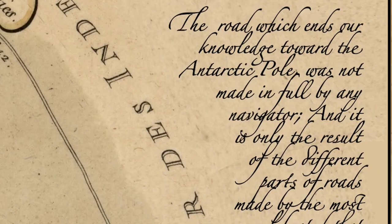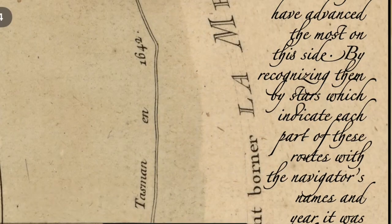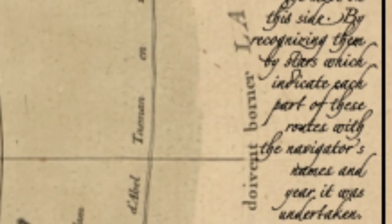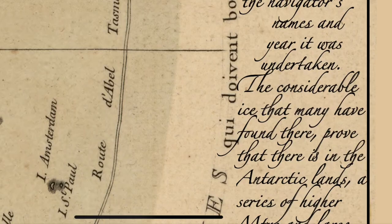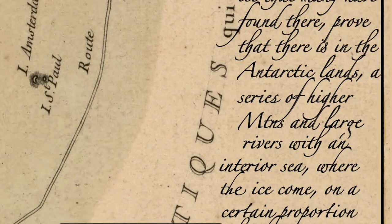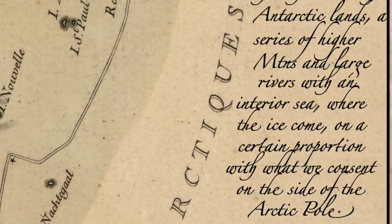The road which ends our knowledge towards the Antarctic Pole was not made in full by any navigator, and it is only the result of the different parts of routes made by the most celebrated that have advanced the most of this side. We recognize them by marking them with stars which indicate each part of the route with the navigator's name and the year it was undertaken. The considerable ice that many have found there proved that there is, in the Antarctic lands, a series of high mountains and large rivers with an interior sea, where the ice comes in a certain proportion with what we can scent on the side of the Arctic Pole.